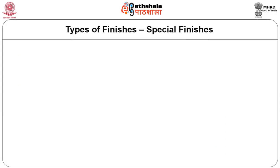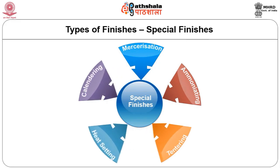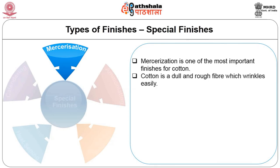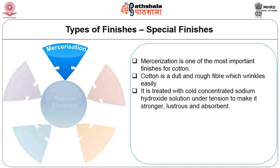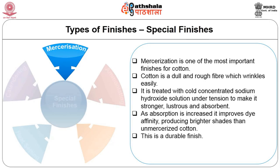Special finishes are applied to selected fabrics based on the properties desired. Mercerization, ammoniating, tentering, heat setting and calendaring are special finishes. Mercerization is one of the most important finishes for cotton — cotton is a dull and rough fiber that wrinkles easily. It is treated with cold concentrated sodium hydroxide solution under tension to make it stronger, lustrous and absorbent. Increased absorption improves dye affinity, producing brighter shades than unmercerized cotton. This is a durable finish.